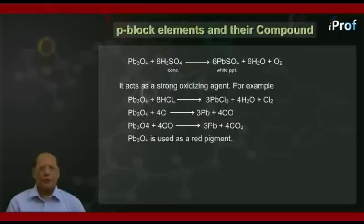Pb3O4 plus 8HCl gives 3PbCl2 plus 4H2O plus Cl2. Pb3O4 plus 4C gives 3Pb plus 4CO. Pb3O4 is used as a red pigment.